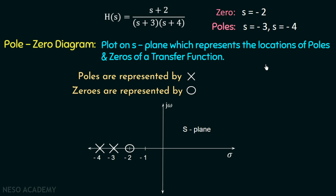So now we are done with the introduction of zeros and poles for a transfer function, and we have also discussed the pole-zero diagram by which we can represent zeros and poles on the s-plane.